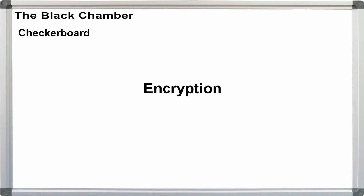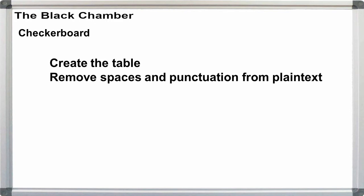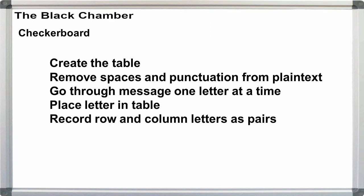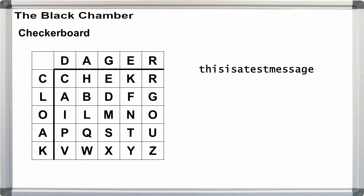Encryption. When we have our table, we can start encrypting our message. Going through the plaintext one letter at a time, pick the row and column index letters in pairs. While we could write the cipher in groups of 5s, by tradition, we leave them in pairs. This is a test message. Continue this pattern for the rest of the message.